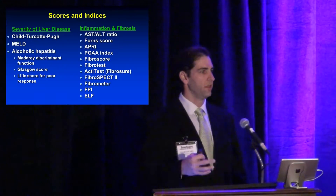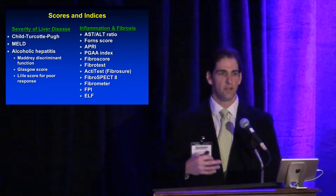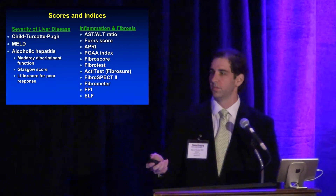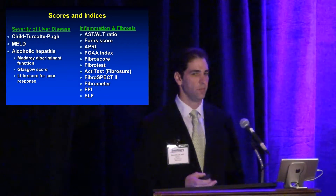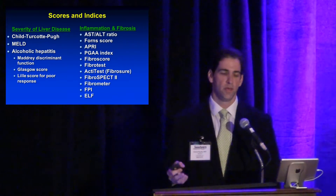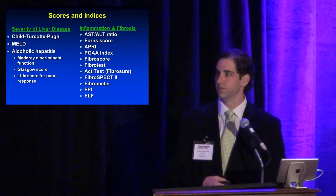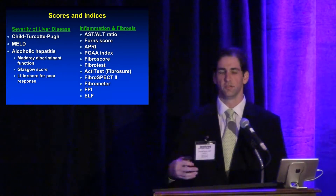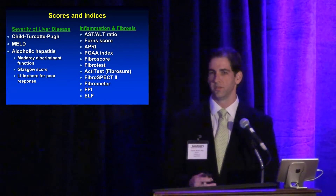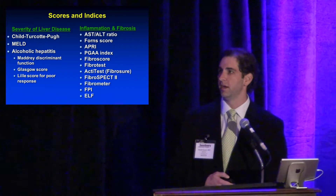In addition to clinical findings, we have several scores to determine severity of disease: the Child-Turcotte-Pugh score and MELD are the two most commonly used. For acute alcoholic hepatitis, numerous scores identify the most severe cases. There are also scores to estimate fibrosis without liver biopsy — they are variably helpful but not as accurate as a biopsy.